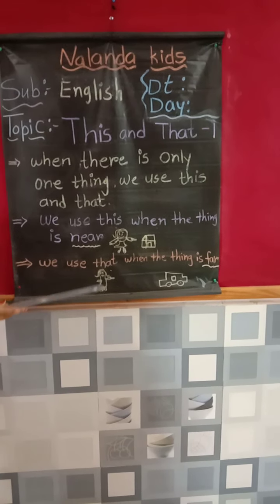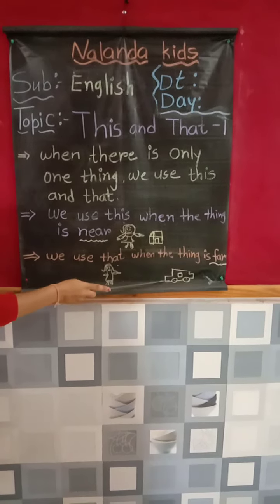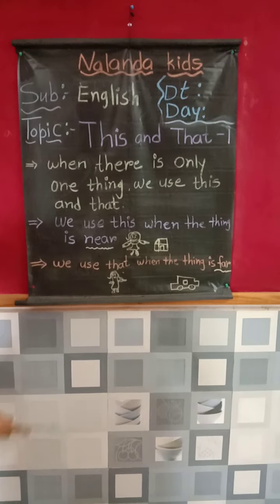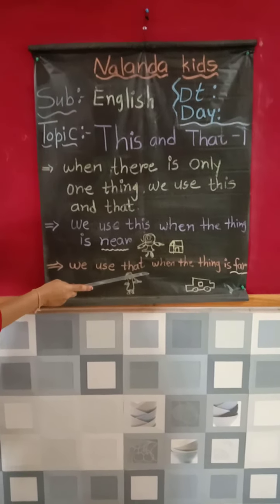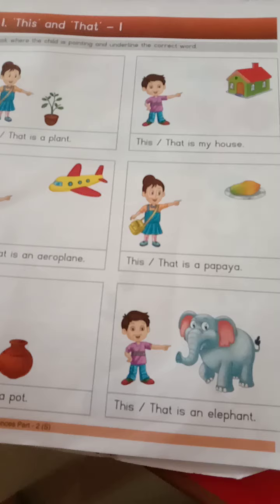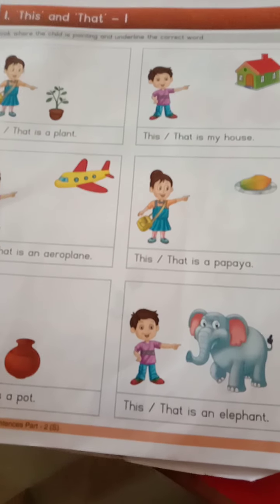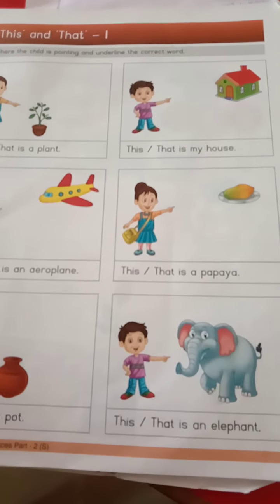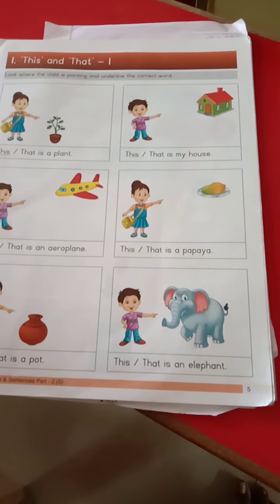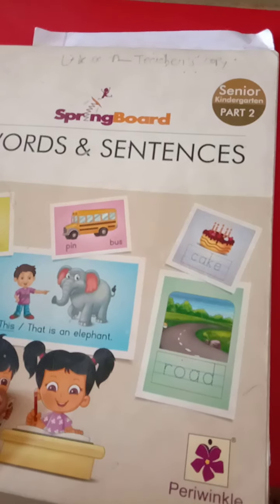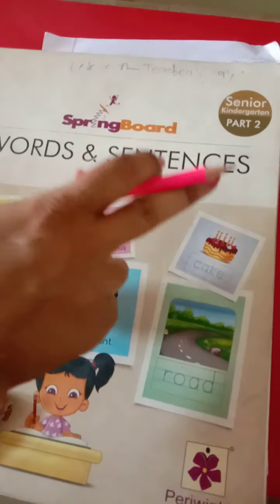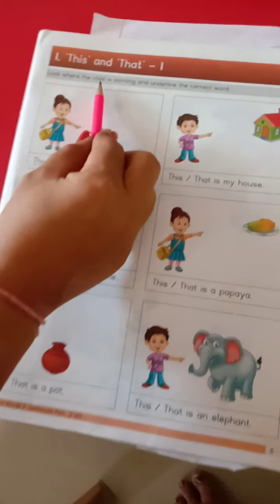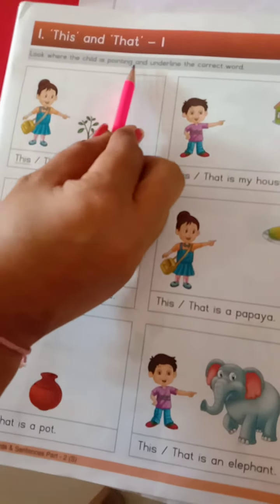For example, here is the girl's picture and here is the car. The car is far away. So, how can we know where to use 'this' or 'that'?